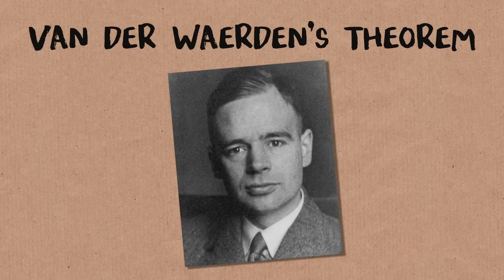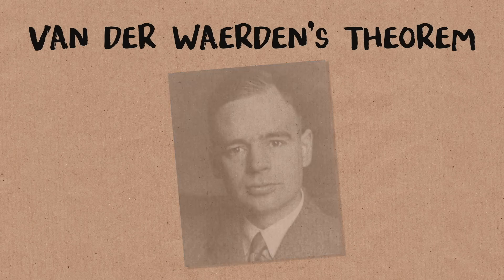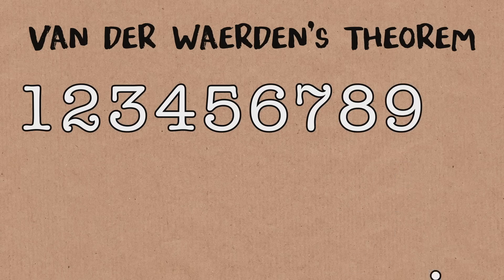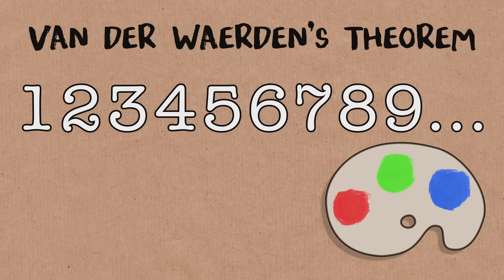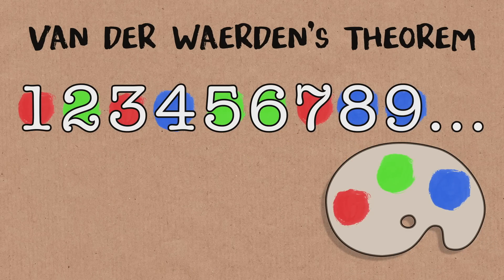Van der Waerden's Theorem is about coloring the positive integers. So you take the numbers 1, 2, 3, 4, 5, and so on, and to each one you assign a color. And the idea is that you only have finitely many colors to use.